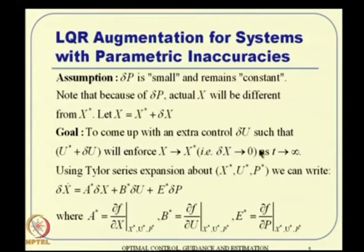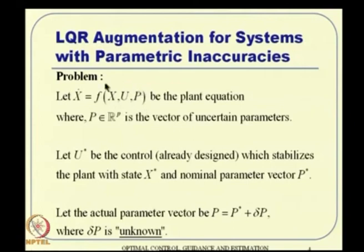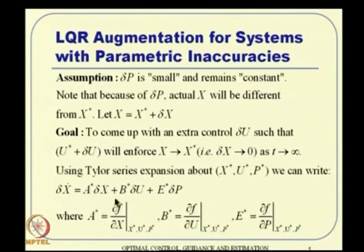Note that δp is not known. Using Taylor series expansion about x*, u*, p*, we can write a linearized expression. Following the standard linearization procedure about nominal values x*, u*, p*, we can compute Jacobian matrices A*, B*, E* and write a linearized dynamics for δx. The idea is to cancel the effect of δp. Since δp is constant, there needs to be a constant bias control δu_ss to cancel it. The cost function should penalize δx going to 0 and (δu - δu_ss) going to 0.